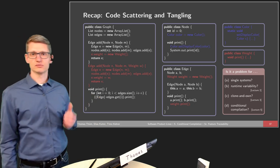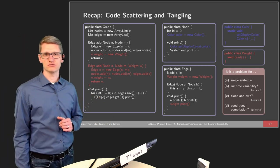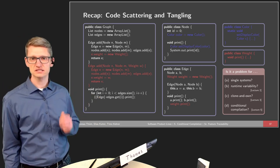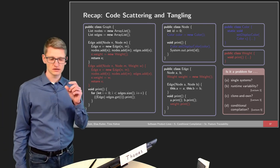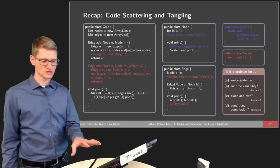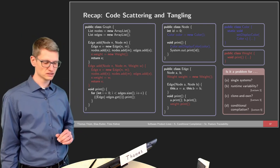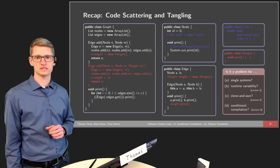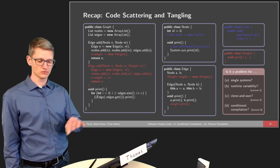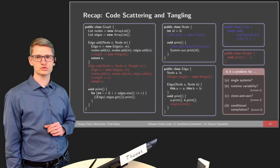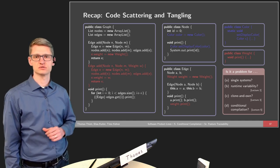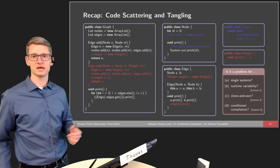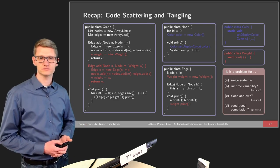Do we have the problems of scattering and tangling for runtime variability? Yes, we have. It's very similar to the view we have here, but we would have some additional conditional statements where we include certain parts, execute some parts of the source code or not, depending on the value of features.